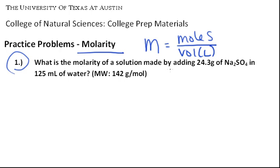You're asked to find the molarity of a solution that is made by adding 24.3 grams of sodium sulfate in 125 milliliters of water. So we need to find molarity, and first we need to convert this grams to moles, and we have the molecular weight.